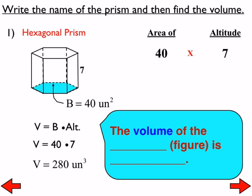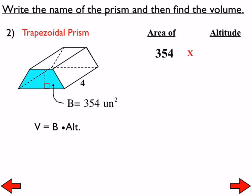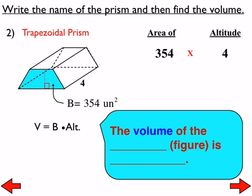That brings up a point from last week's quiz: most of you remembered to put units, but a few left them off. Since no units are given in the figure, we say 'cubic units.' For number two, the name is a trapezoidal prism, because the front and back faces are trapezoids that are parallel to each other. The area of the trapezoid is already given as 354 square units; the altitude is 4. So the volume of the trapezoidal prism is 1,416 cubic units.